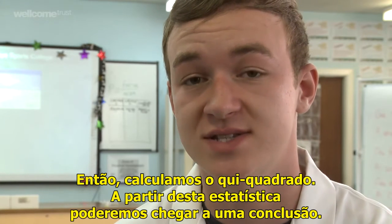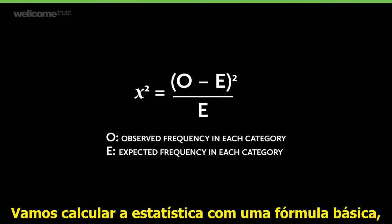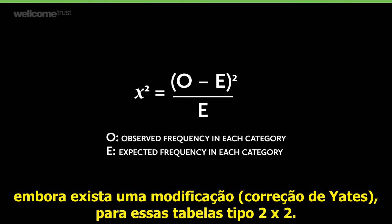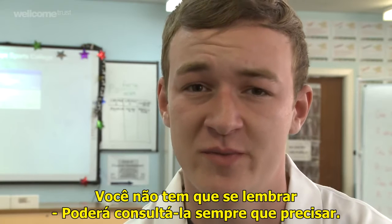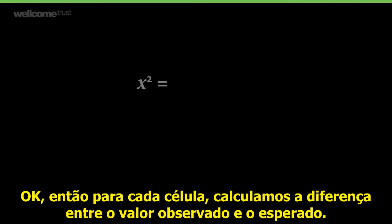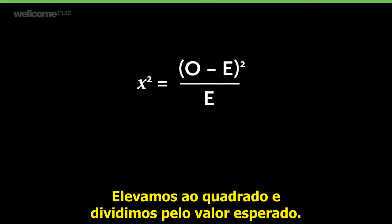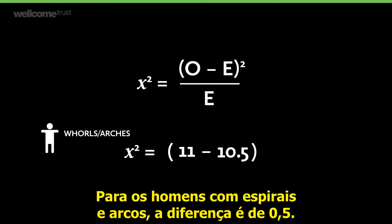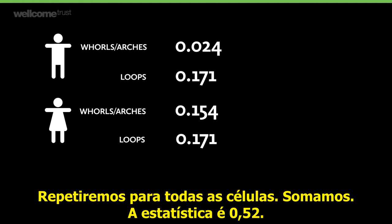Then we will work out the chi-squared statistic, which will tell us what conclusion we can come to. We'll work it out using a basic formula — although later on you might meet a Yates modification, which is often used for this 2×2 table. For each cell, we work out the difference between the observed value and the expected value, square it, and divide by the expected value. For men with whorls and arches, the difference is 0.5; we square it to get 0.25, then divide by 10.5 to get 0.024. Once we've done that for all the cells, we add it all up to get our statistic, which is 0.52.